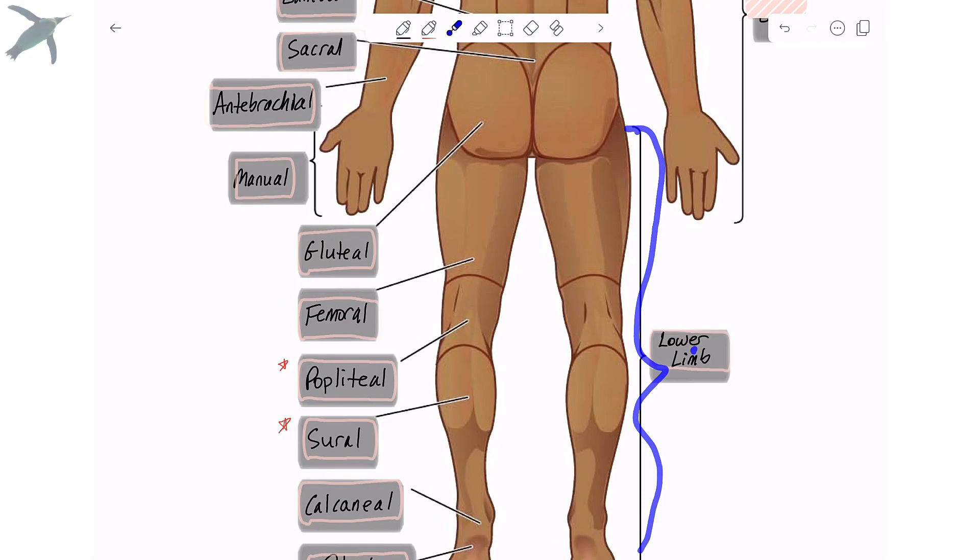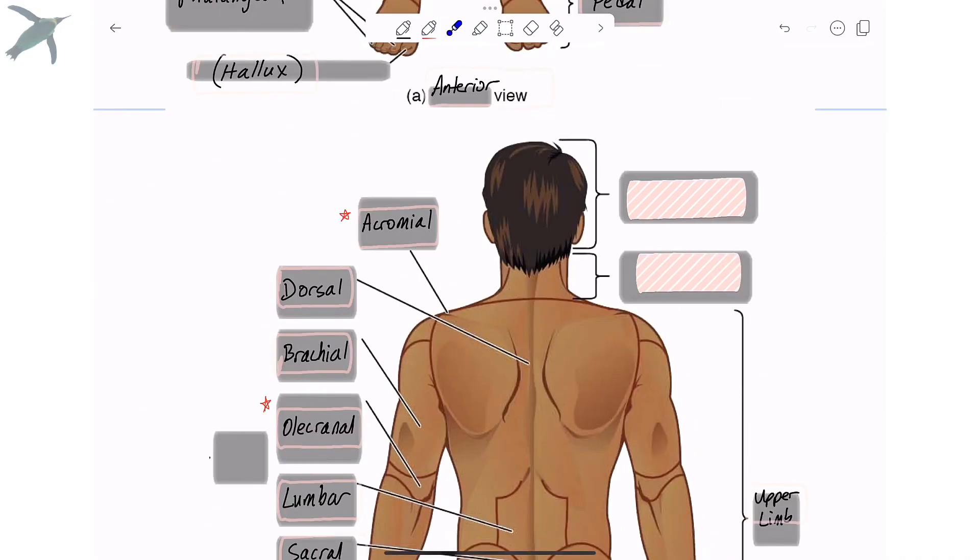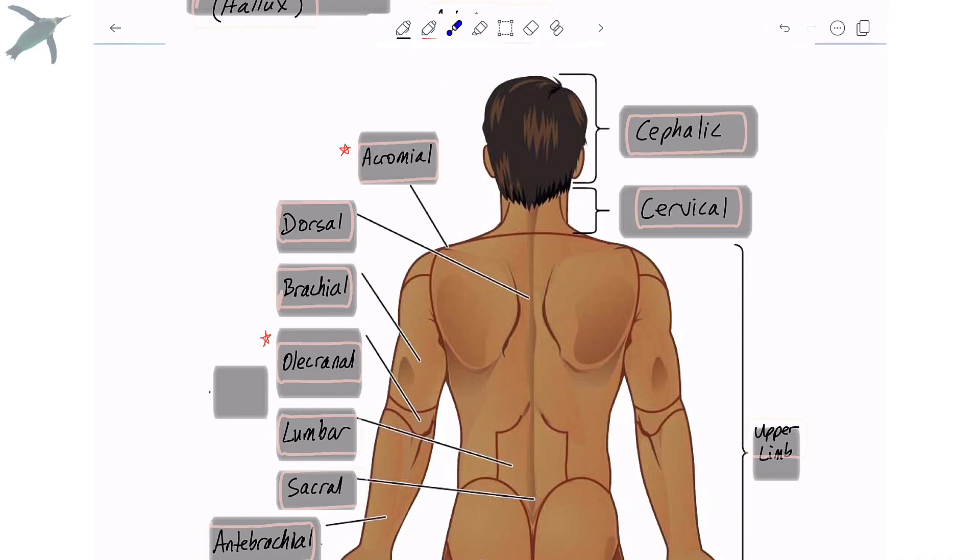And of course, all of this is going to be the lower limb. And all of the arm we refer to as the upper limb. And again, now we get a posterior view of the neck, which is the cervical region. And the entire head we refer to as the cephalic region. And those are your body regions.